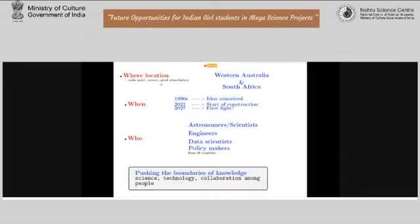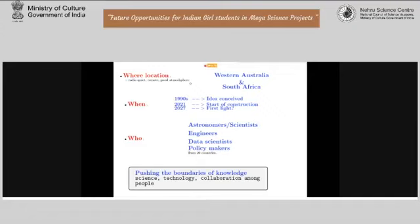The SKA is going to be located in two places: western Australia and South Africa. These places have been chosen because they are very radio quiet — there are few people living there so there is limited interference from human-related radio sources. They are very remote and the atmosphere is good, meaning signals coming from the cosmos will reach us and not get absorbed by the atmosphere.